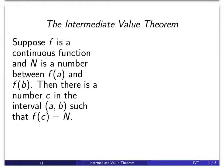It's a bit messy, lots of terminology, but suppose f is a continuous function and N is a number between f(a) and f(b). a and b are two endpoints of an interval. Then there is a number c in the interval from a to b such that f(c) is equal to N.